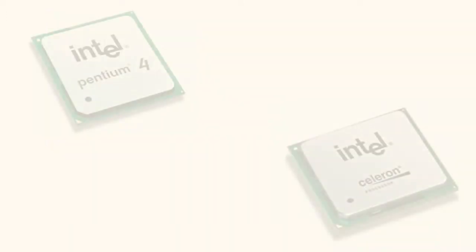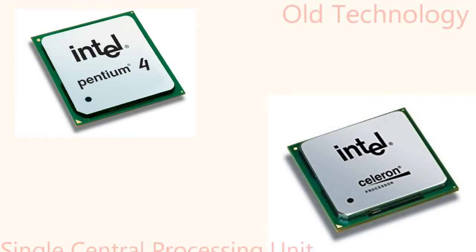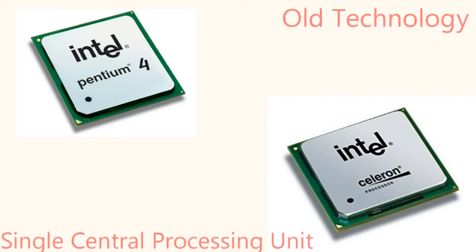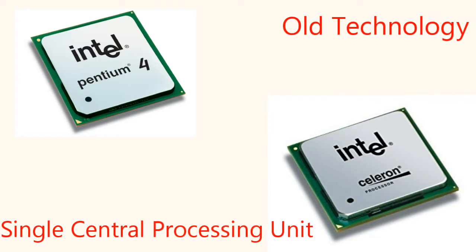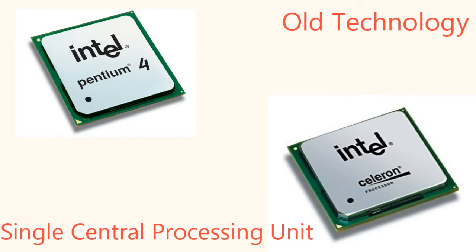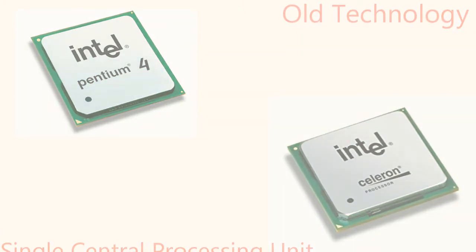For Intel processors, this is single-core processors. Intel Pentium 4 processors are single-core processors. Intel's Celeron 400 series is a Celeron D.